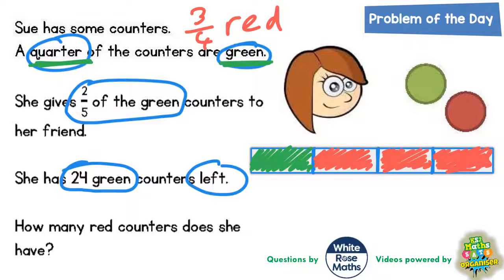Now it does say that she gives two-fifths of the green counters to her friend. So what I'm actually going to do here is focus on only the green section of the bar model. And we now need to focus on this green section and split this into fifths because we're giving two-fifths to her friend. So if we look at the green section only and split it into fifths, it says she has 24 green counters left.